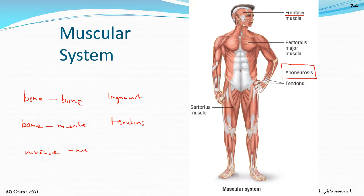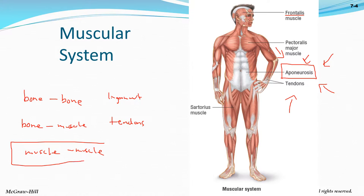What connects one muscle to another muscle? That's the aponeurosis — a brand new term. Connecting muscle to muscle is the aponeurosis. In your abs, one bit of ab muscle connects to the next through aponeurosis. It's the tough connective tissue — like the tough part underneath gristle when you cook meat.